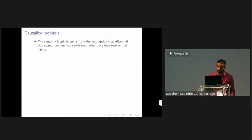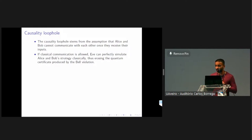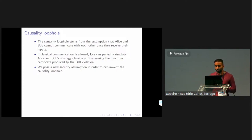There is a common loophole in DIQKD protocols: we assume non-signaling, meaning Alice and Bob are causally separated and cannot communicate once they receive their inputs. There are results showing that Eve can actually simulate this quantum correlation — a maximal violation of the Bell inequality — using only classical communication. So if the non-signaling assumption is violated, we also lose the certificate from the Bell violation. Previous practical implementations address this by ensuring Alice and Bob are separated by a far enough distance so that even light cannot travel between them within a specific time window.